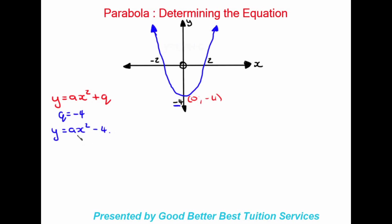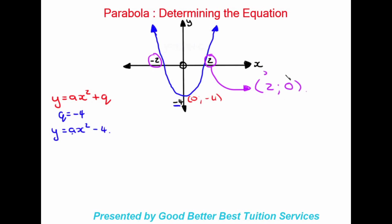At this point we only have one unknown in the equation, which is a. The reason it's the only unknown is because x and y are placeholders for coordinates. All we need to do now is substitute in any set of coordinates given to us. We'll look at the coordinates negative two or positive two — either one will do, so we'll move with positive two. This coordinate is two and zero: two being the x value, zero being the y value.